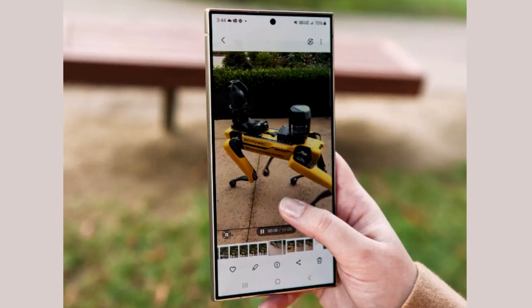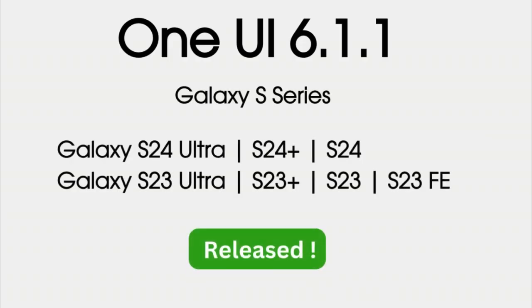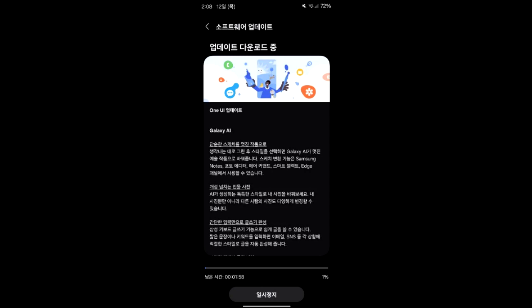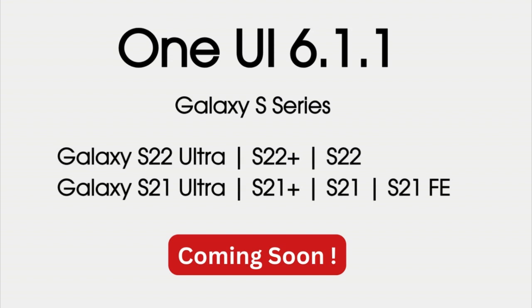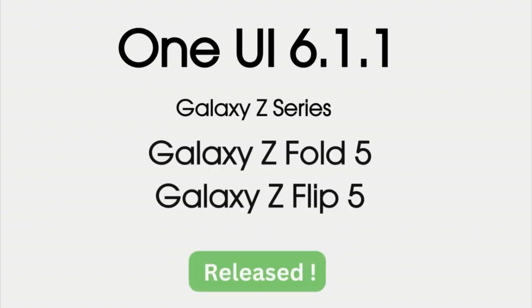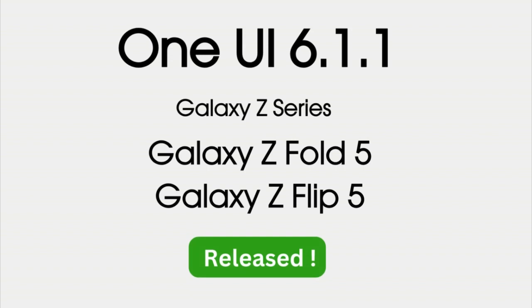If you're using the Galaxy S24 series or the Galaxy S23 series, the One UI 6.1.1 update is out for you — check for it in Settings > Software Update. Samsung will also release this update to the Galaxy S22 series. The S21 series eligibility is uncertain, but if it doesn't get One UI 6.1.1, the S21 will definitely get the One UI 7 Android 15 update in upcoming months.